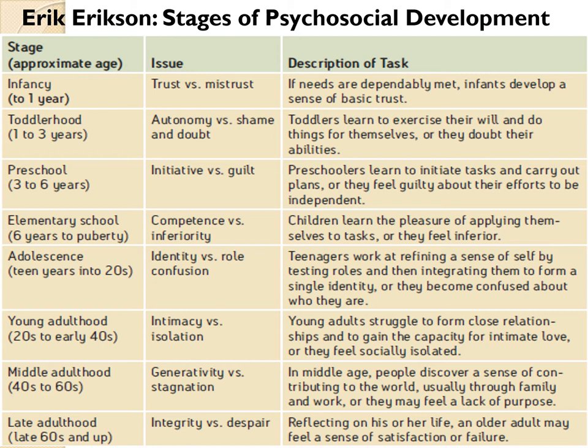Erikson's stages of psychosocial development parallel Piaget's cognitive stages. Even though Erikson's model incorporates nurture, he is still considered a stage theorist — and therefore also genetic. Each of his eight stages involves a 'crisis' with two possible outcomes, and people can revisit earlier stages later in life.